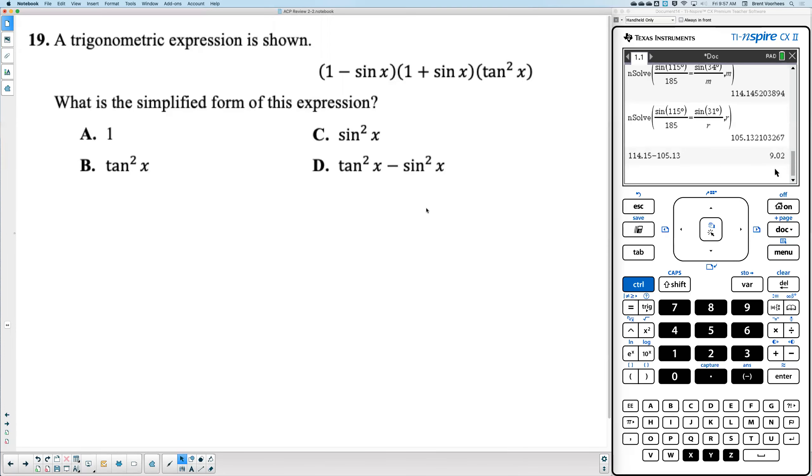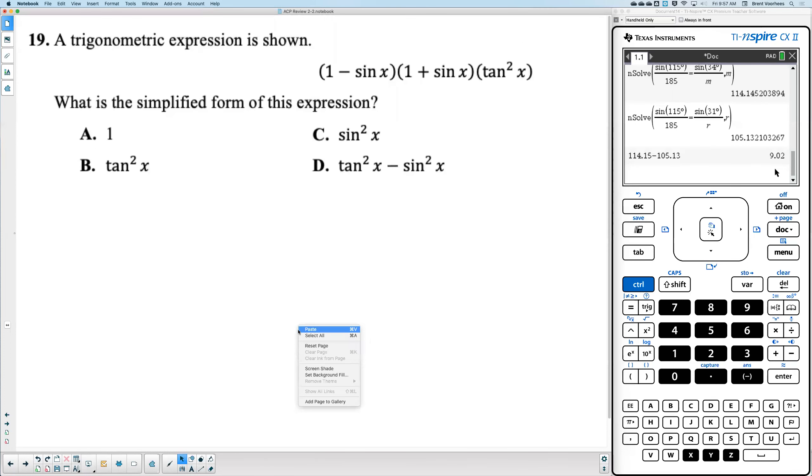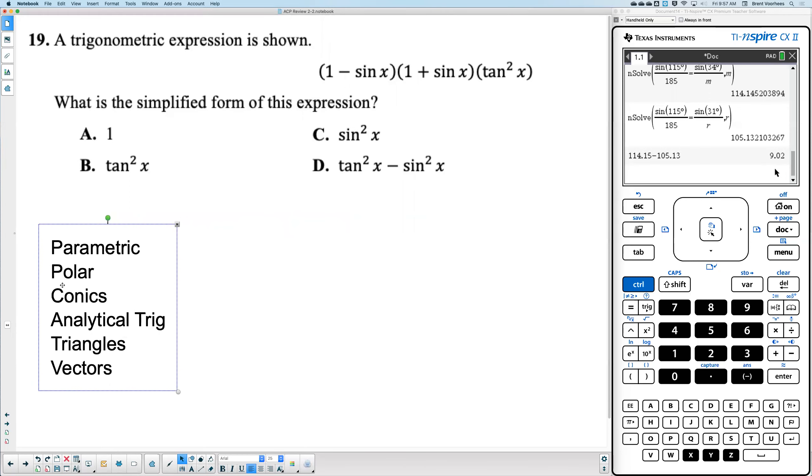Number 19, a trig expression is shown. Which is the simplified form of this expression? Oh, no, I lost my pen. What type of problem is this one now? Analytical trig.